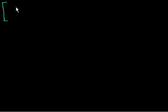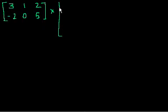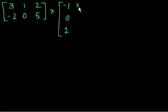So let's say I wanted to multiply the matrix — I'll keep it relatively small so we don't run out of space — 3, 1, 2, minus 2, 0, 5. And I want to multiply that times the matrix: minus 1, 0, 2, 3, 5, 5.